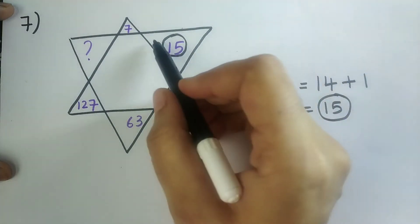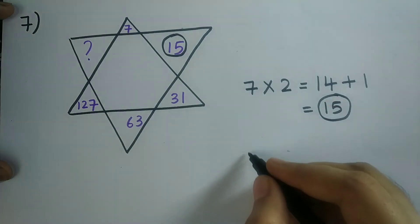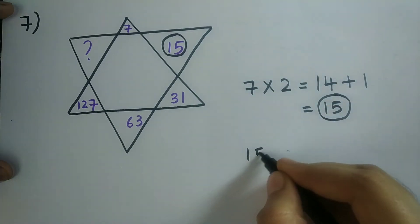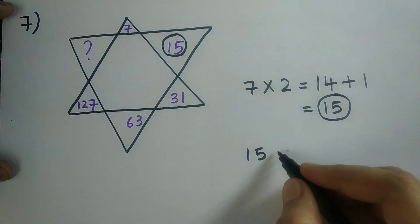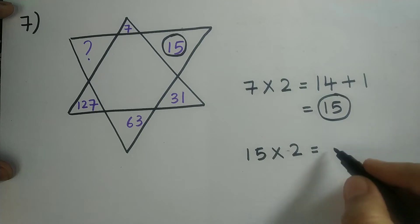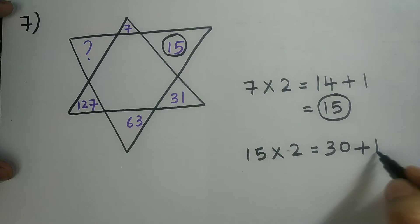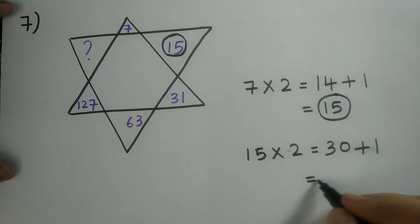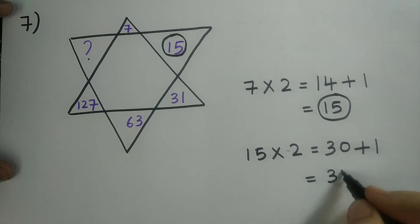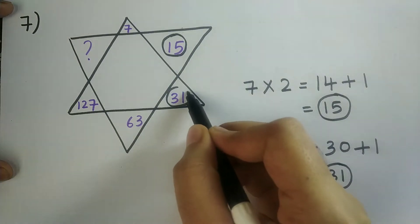Now I should write this box value, which is 15. I should multiply this with 2, so I will get the answer as 30. And I should add this number with 1. So I will get the answer as 31. This value is matching with the next box value.